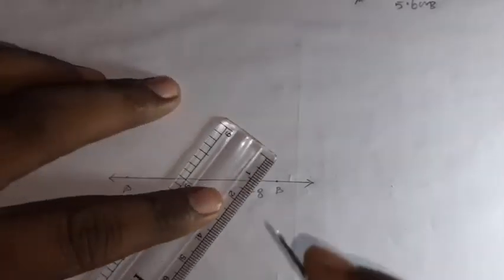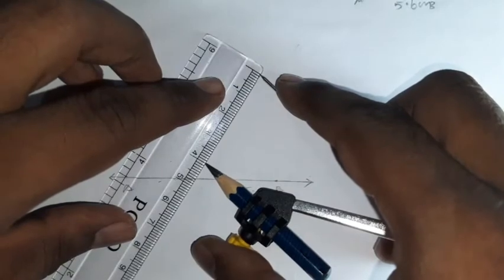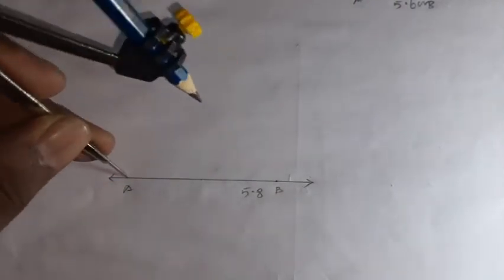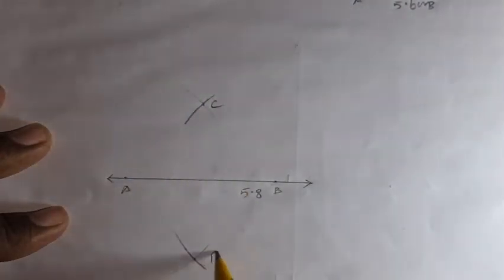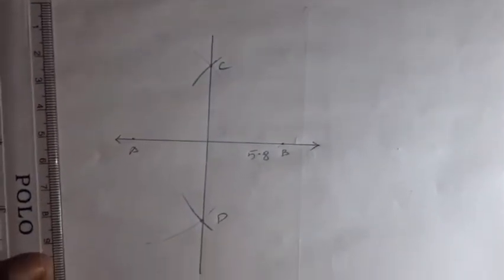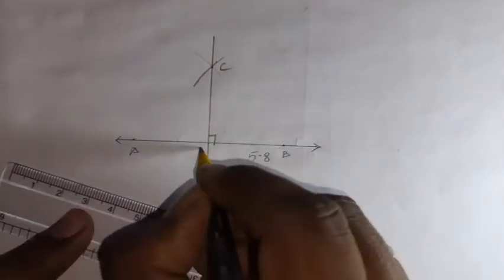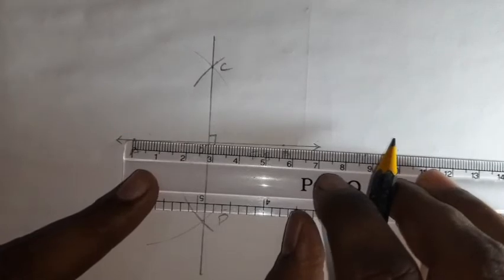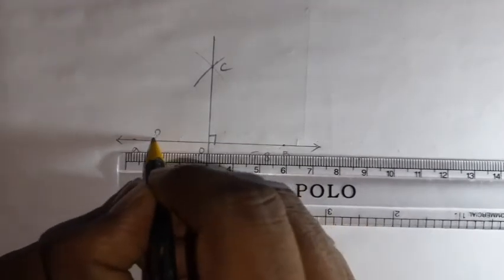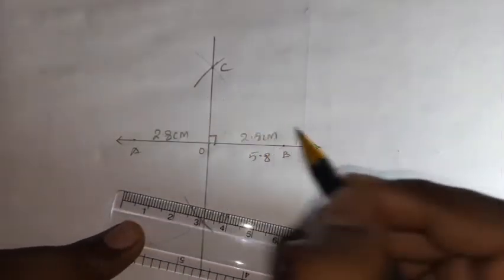Next, 5.6 centimeters. AB equals 5.6 centimeters. The main diagram. Scale. 0 mark dot. 5.6 - 5.1, 5.2, 5.3, 5.4, 5.5, 5.6. So 5.6. Scaling. Mark the dot. Connect the point A, the other point B. Measurement is 5.8.